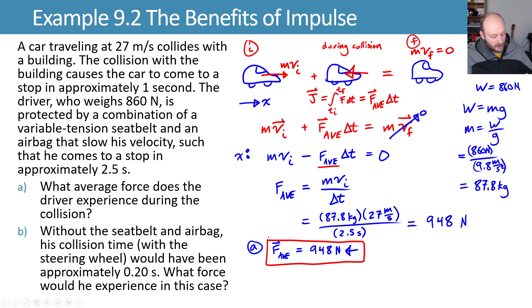Part B, we want to know what would it have been if we had stopped in 0.2 seconds instead by banging into the steering wheel? And here, we have the answer already. We just need to plug in a new time. So our new average force will be the same thing as before, but now with a new time plugged in.